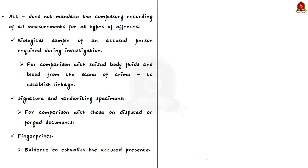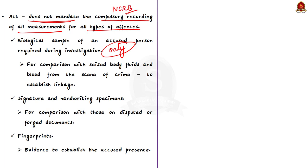The act does not mandate compulsory recording of all measurements for all types of offences. Measurements shall be taken only if so required and as may be prescribed by governments. The National Crime Record Bureau or NCRB will store, process and preserve whatever data is collected by the states and union territories. The Crime and Criminal Tracking Network and System, that is CCTNS data, has helped enforcement agencies across states.